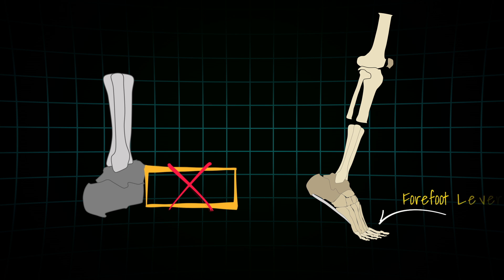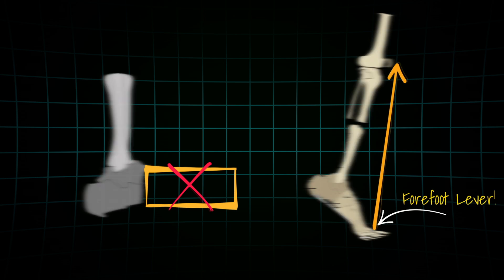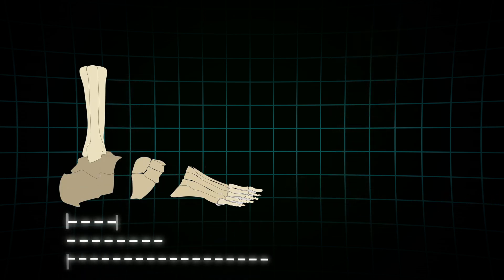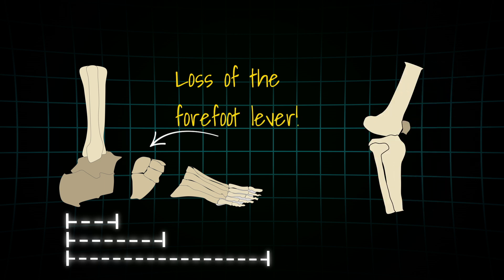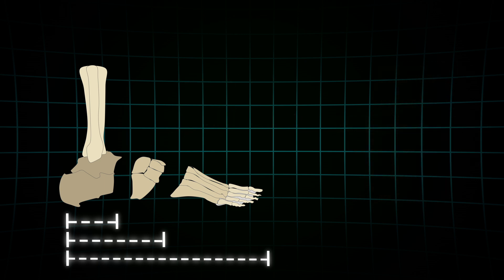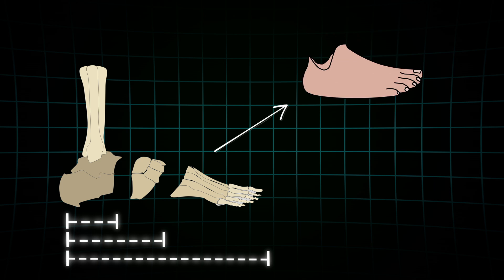Losing part of the forefoot sounds minor, but biomechanically, it's huge. Why? Because the forefoot lever is critical for rolling your weight forward and keeping the knee passively locked. Without it, the body compensates, often by forcing the knee back into hyperextension to stabilize. That's why simple foot prosthetics without biomechanical benefits are sometimes not the ideal solution.